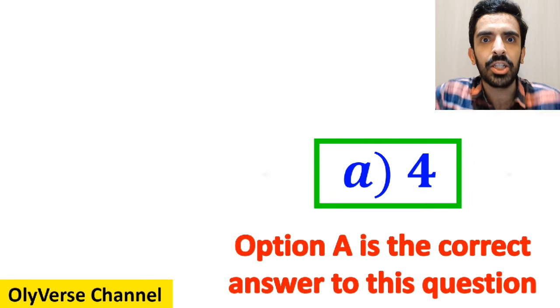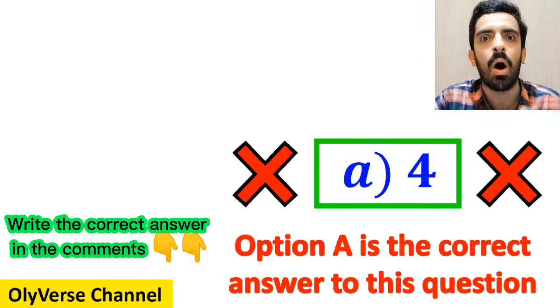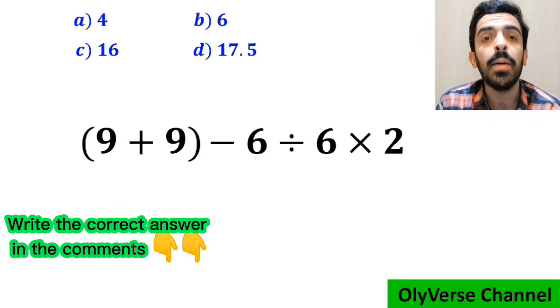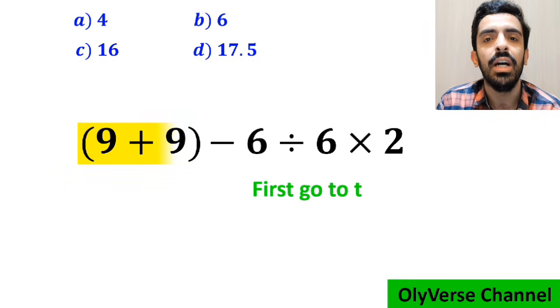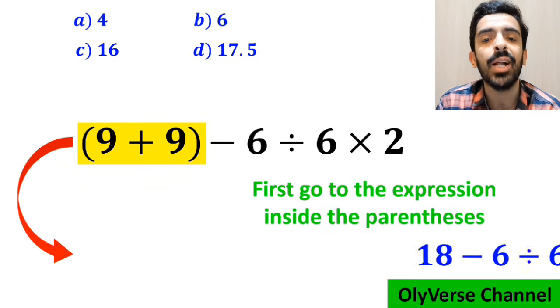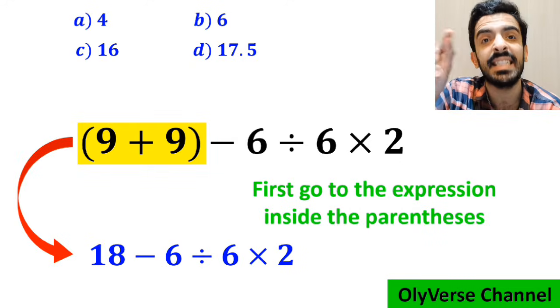However, this answer is absolutely wrong. Also, some other people when solving this question, first go to the expression inside the parenthesis and write this expression as 18 minus 6 divided by 6 multiplied by 2.